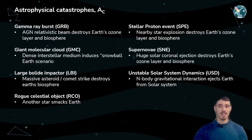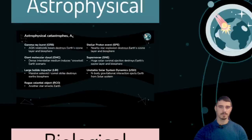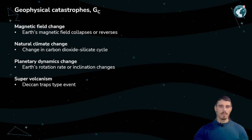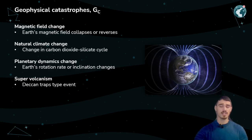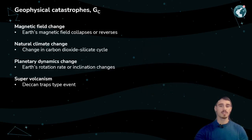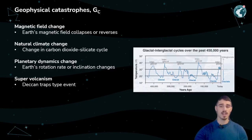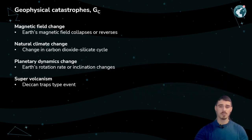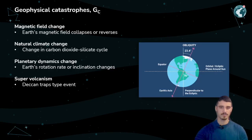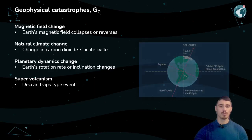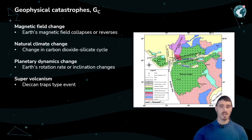Here is a quick summary of the astrophysical catastrophes — we won't look at them further at this point. In the section of geophysical catastrophes, we distinguish between four types: magnetic field change — the collapse or reversal of the Earth's magnetic field; natural climate change — the change in the carbon dioxide-silicate cycle; planetary dynamics change — a possible change in Earth's rotation rate or inclination; and super-volcanism, involving deccan traps type events, which played a role in the KT extinction.